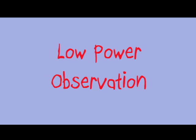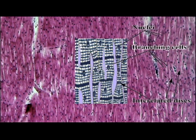Low power observation shows the contractile cells to be short and branched, and at this magnification only a few intercalated discs are observed. As the slide is scanned, notice the similarity of the tissue — the numerous short, striated, branching cells.